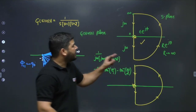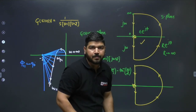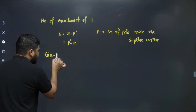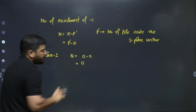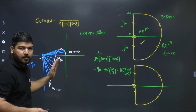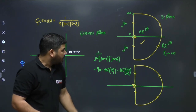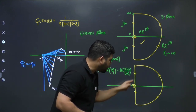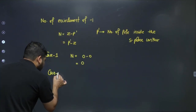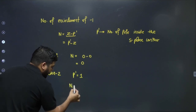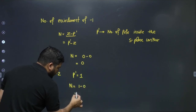In Case 1 (contour excludes the origin pole): P' = 0 poles inside the contour, and Z = 0, so N = Z − P' = 0. There are zero encirclements of minus one when the complete Nyquist plot is drawn for this contour.